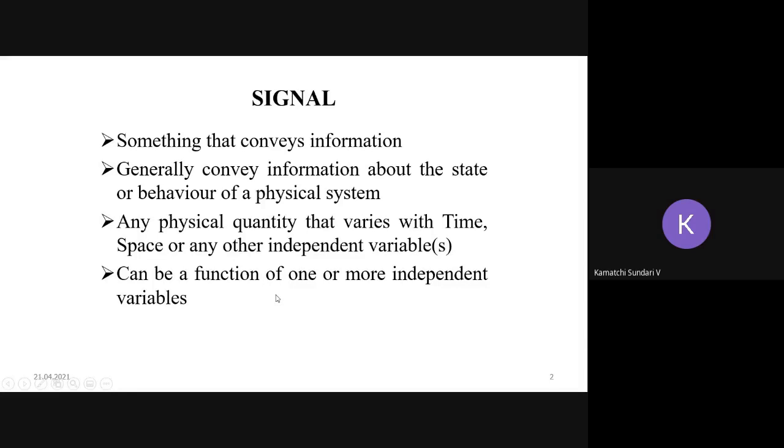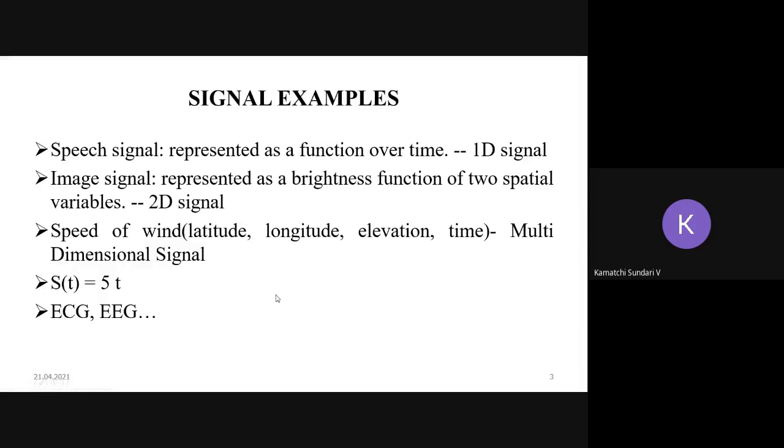If a signal is depending on only one variable, then the signal is known as one dimensional signal. The example is speech signal. If a signal is depending on two different variables, then it is called two dimensional signal.